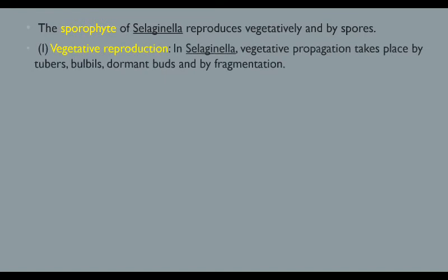Selaginella reproduces vegetatively and by spores. In vegetative reproduction, Selaginella reproduces by the help of tubers, bulbils, and dormant buds, and by fragmentation.